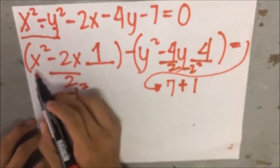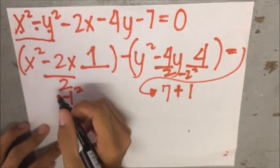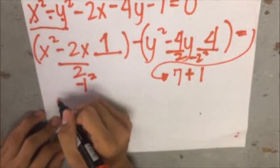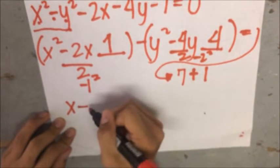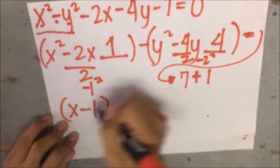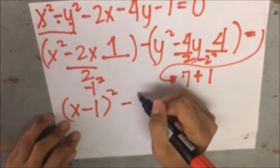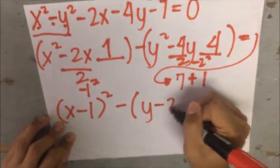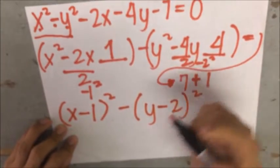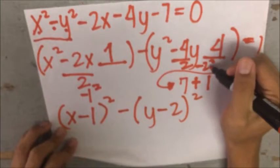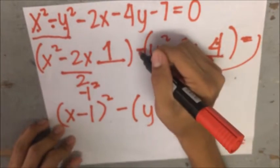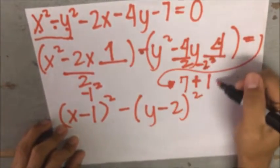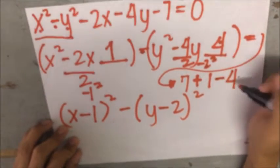Next, we will make it as a binomial term, which gives us (x minus 1) squared minus (y minus 2) squared. Oops, I forgot to add the squared of 2 multiplied by negative 1 to here, so it becomes negative 4.